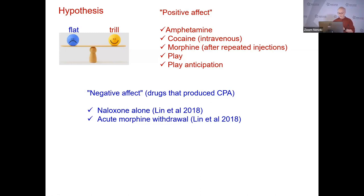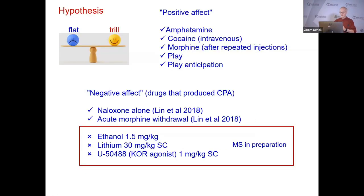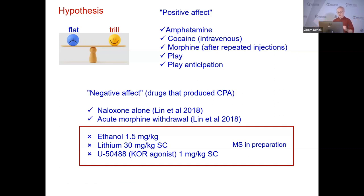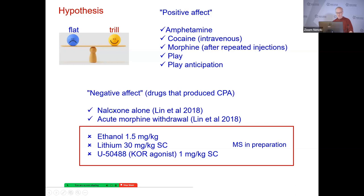So far so good — it looks as if the hypothesis is holding up quite nicely. But things get more complicated. I'm going to describe three drugs that we picked at doses known from the literature to reliably produce conditioned place aversion. We tested the acute effects of these drugs on USV emission and afterwards established that they all did produce clear place aversion. What were the calls during conditioning? No 22 kHz calls were elicited. And in addition, the shift towards flat calling and away from trill calling that we saw with other aversive conditions did not consistently occur with these drugs. This suggests that the general hypothesis is not so general after all.